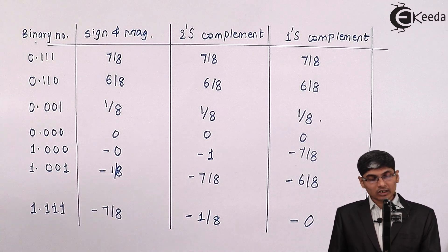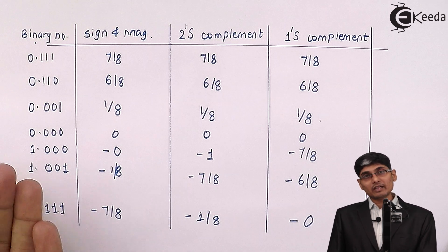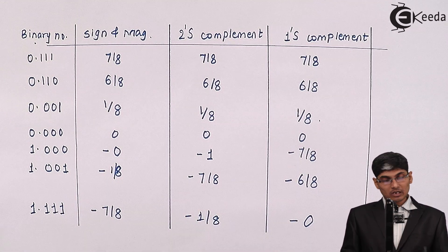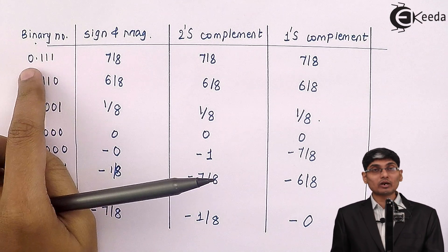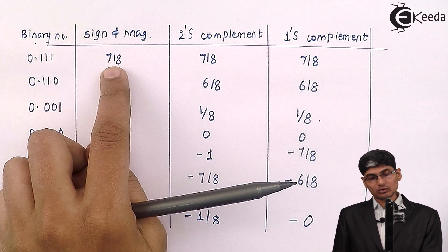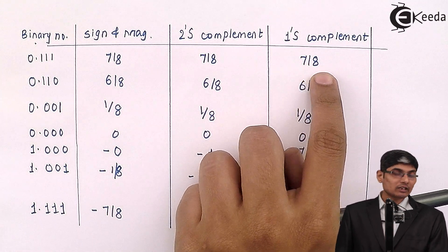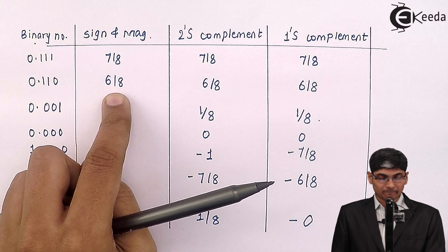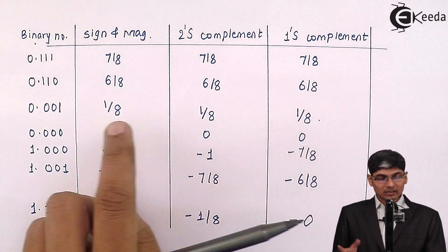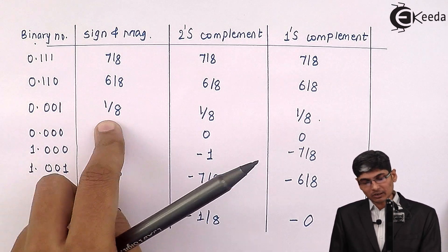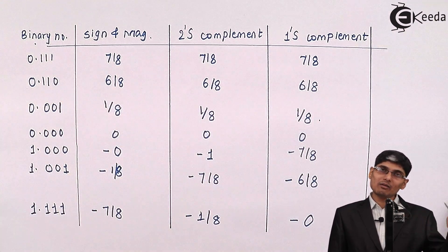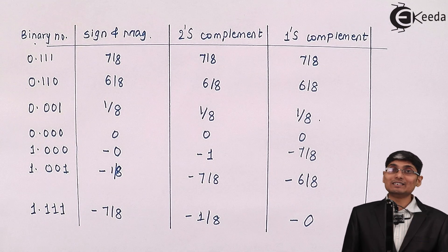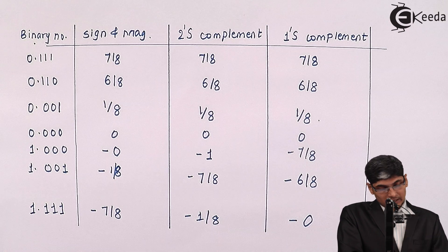Now let us see a comparison of these three representations for certain binary numbers. For 0.111 in sign and magnitude it is 7/8, in two's complement it is 7/8, and in one's complement it is also 7/8. Similarly, 0.110 gives 6/8 in all three, and 0.001 gives 1/8 in all three. So for positive numbers, all three representations give the same bits.